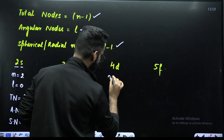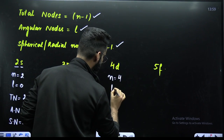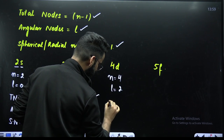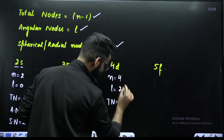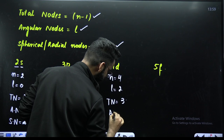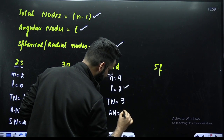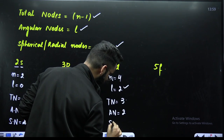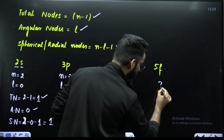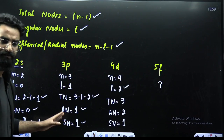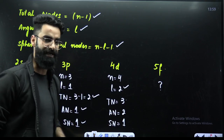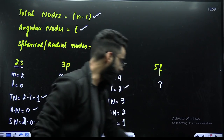For 4D: N = 4, and for the D subshell L = 2. Total number of nodes = N − 1 = 4 − 1 = 3. Angular nodes = L = 2. Spherical nodes = N − L − 1 = 4 − 2 − 1 = 1. That's your homework question. This is the first concept — a short question asked in your upcoming NEET examination.